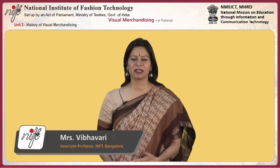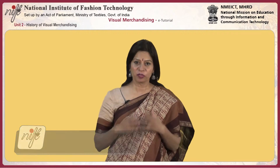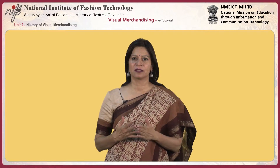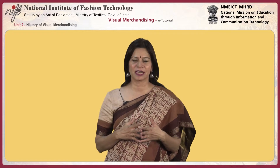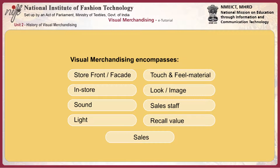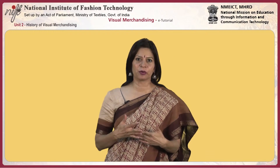Welcome to the unit on history of visual merchandising. Before we begin the history, let us recap on our understanding of visual merchandising done in the previous unit. Visual merchandising is silent selling with an experience to the consumer. It encompasses the storefront or facade, in-store sound, light, fragrance, and the touch and feel of the material.